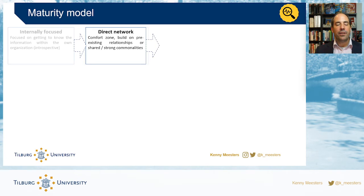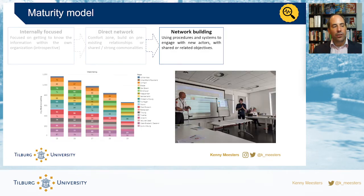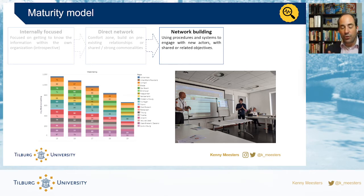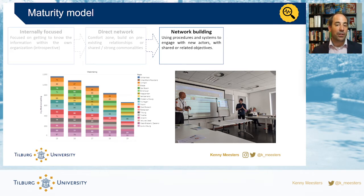The next step is that you start actively building networks. You find information needs that are still unaddressed and need to start finding information from other people. For example, search and rescue teams can tell you how many people are affected and rescued, but the next step is finding out about the livelihood of people — their income, the food situation, and so on.